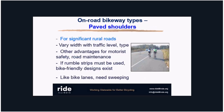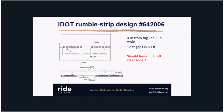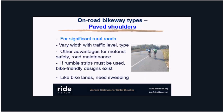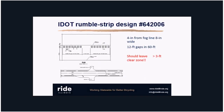Paved shoulders are more of a rural issue — width should depend on traffic level and type. A growing concern is rumble strips: road agencies are increasingly adding them for run-off-the-road motorists, but if done poorly, there's not enough room for cyclists. Ride Illinois has been advocating IDOT to change their rumble strip design to ensure at least enough clear shoulder space without rumbles.